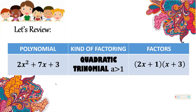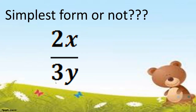Now, I have here questions and you are going to thumbs up if the given expression is already written in simplest form, and thumbs down if it is not. So the question is: simplest form or not? I have here 2x over 3y.